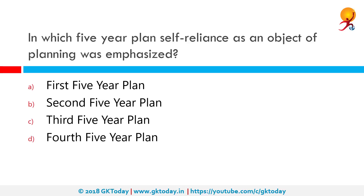In which five-year plan was self-reliance as an object of planning emphasized? The correct answer is the fourth five-year plan, which was in action between 1969 and 1974. There were two main objectives: growth with stability and progressive achievement of self-reliance. During this plan, the slogan of Garibi Hatao was given during the 1971 elections by Indira Gandhi.